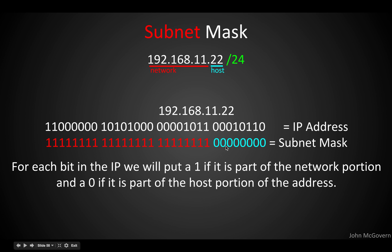Let's talk about the subnet mask and how that works. For each bit in the IP address, we place a binary 1 if it is part of the network portion, and a 0 if it is part of the host portion — and that gives us our subnet mask. These bits correspond to the bits of the address. 1 means network, 0 means host, and they're always contiguous — all 1s in a row followed by all 0s. You'll never see an alternating pattern like 1, 0, 1, 0. That specifies how much of the IP address is the network portion.